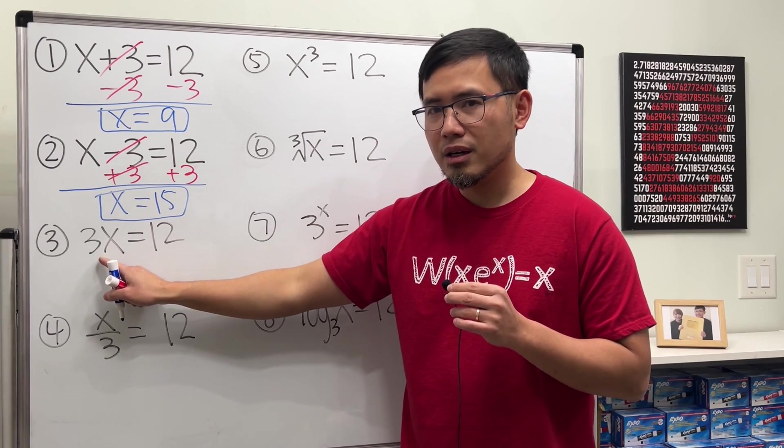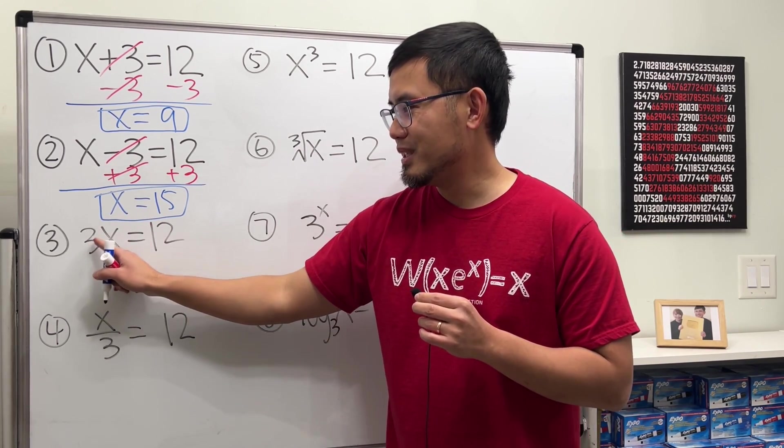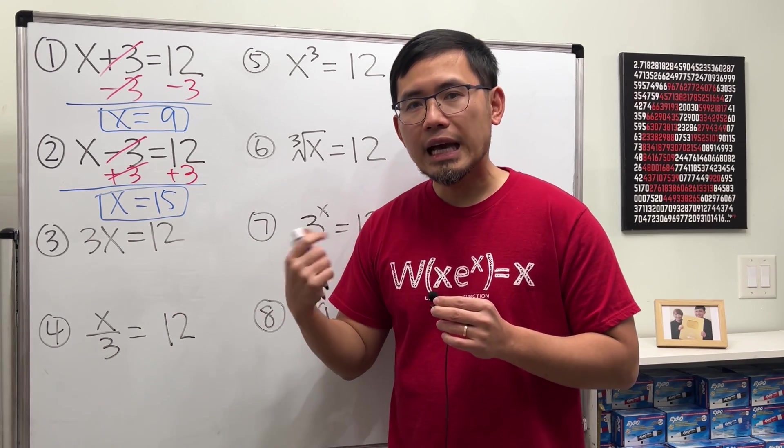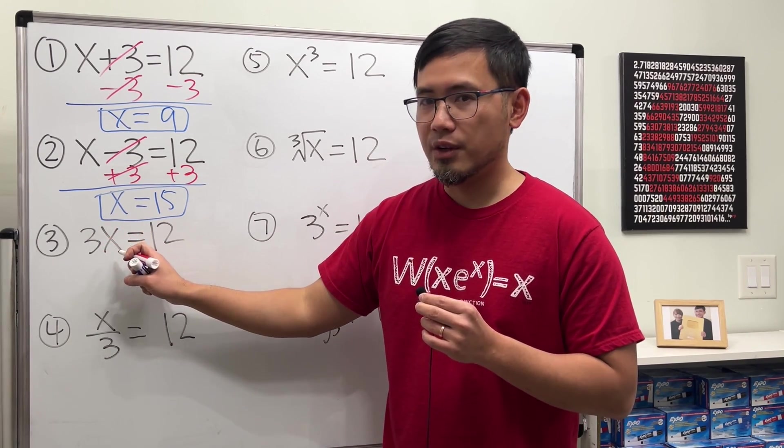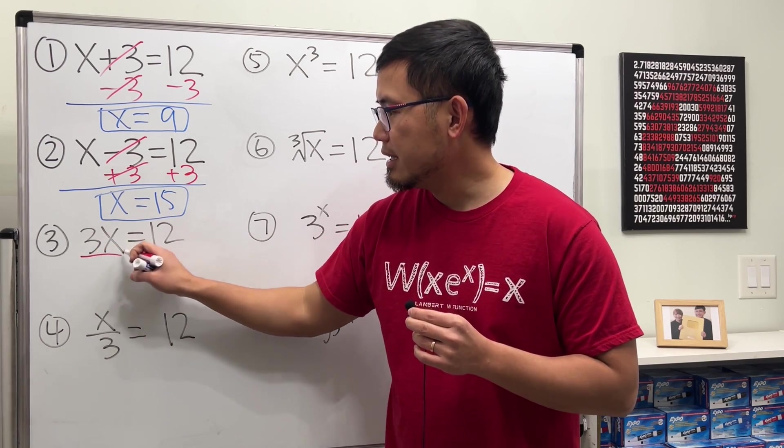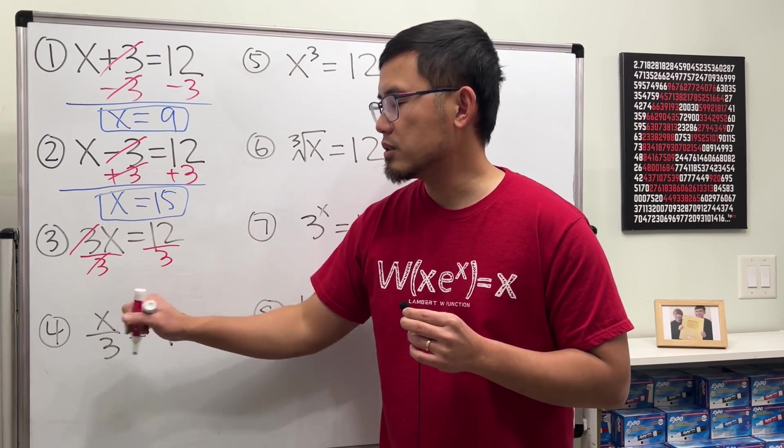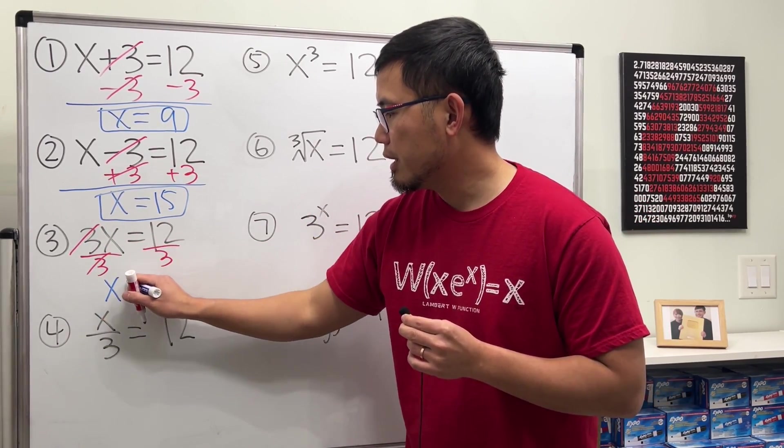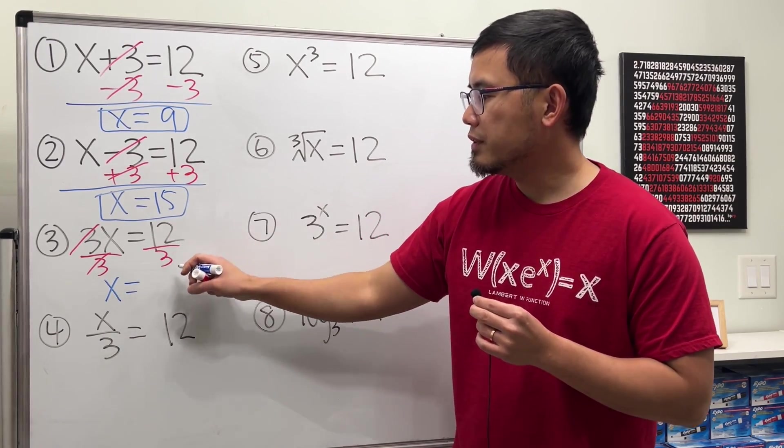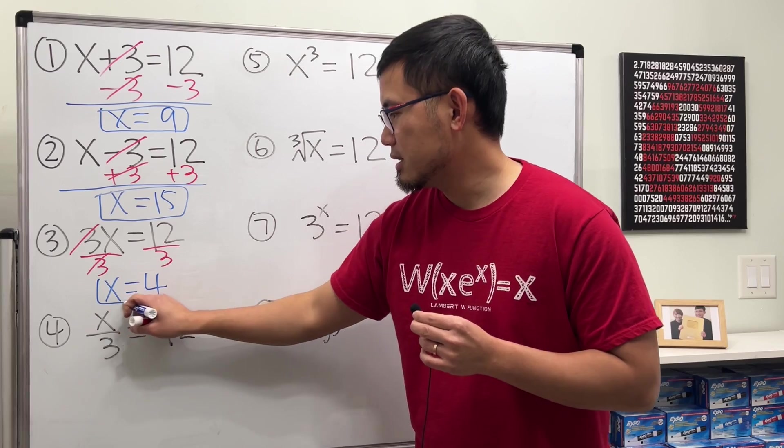Next, what's happening here? This is just 3x. What does that mean? This means 3 times x. And the opposite of that is to divide. You divide the number, not the variable, though. You divide 3 on both sides. So 3 and 3 cancel to be 1. And you will get the x by itself. And that's equal to 12 divided by 3, which is 4. So that will be the answer for this.